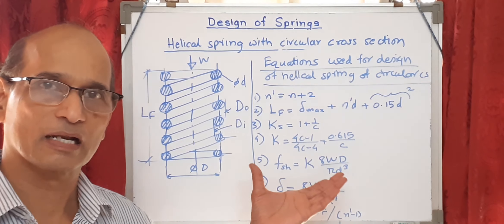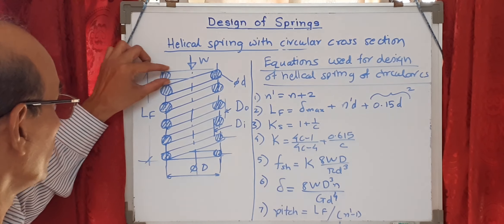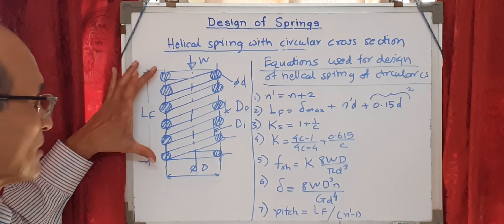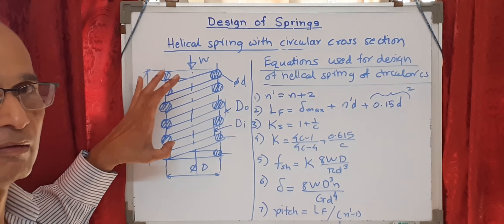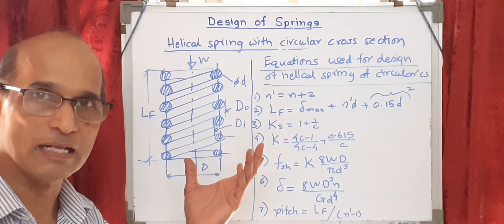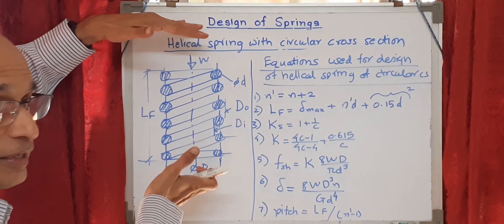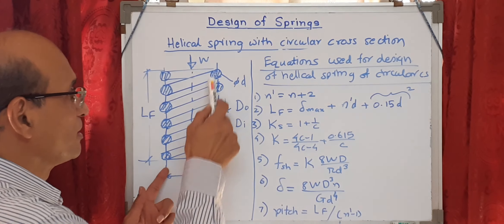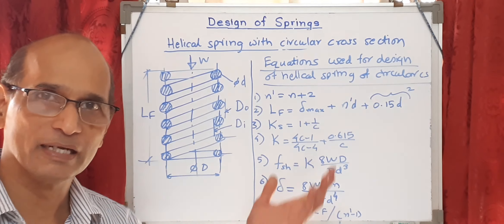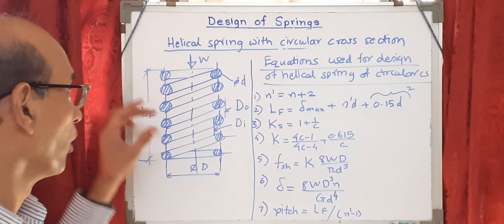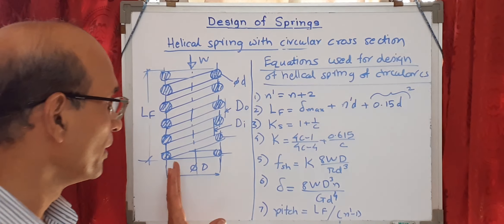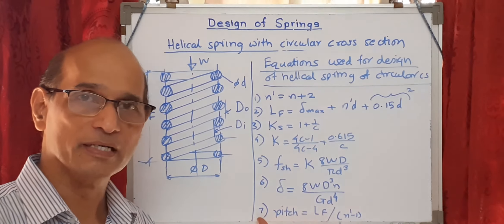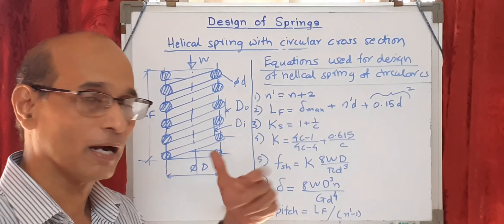There are some remaining small topics. This particular spring's end connection — notice how the last coil is made compared to the rest. The last two coils do not take part in deflection, but they need to be prepared in a particular manner so the spring fits in the required assembly. That is called end modification. We'll take up that topic to find out how to modify the ends of the springs.